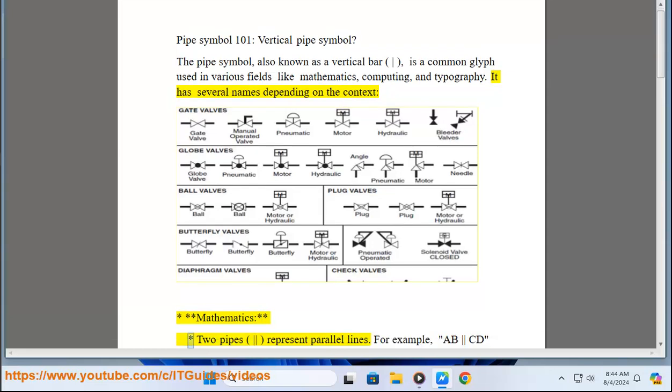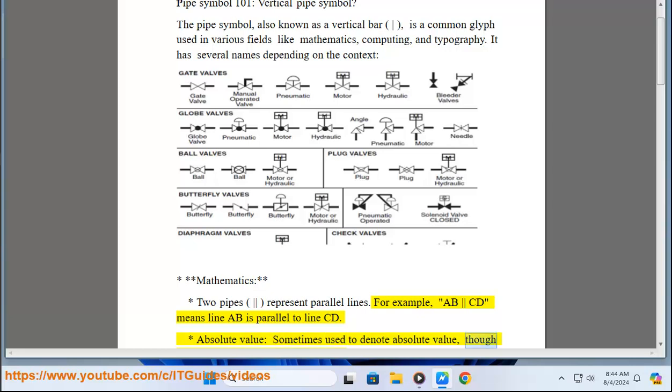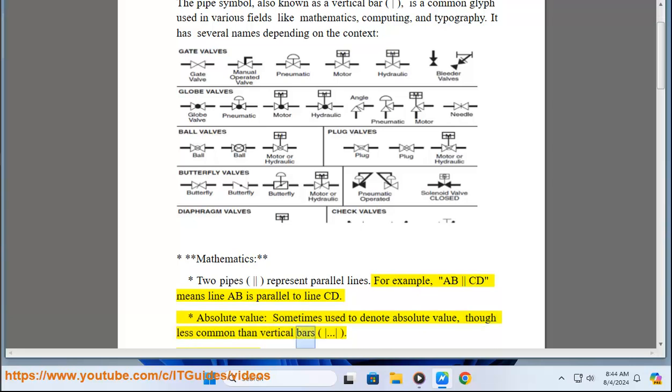Mathematics: Two pipes represent parallel lines. For example, AB || CD means line AB is parallel to line CD. Absolute value: sometimes used, though less common than vertical bars.